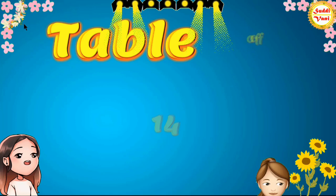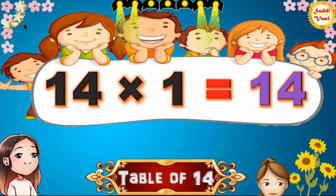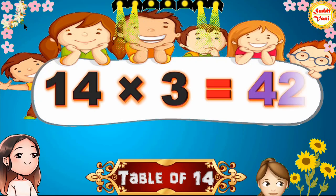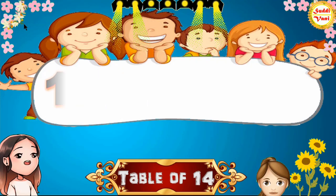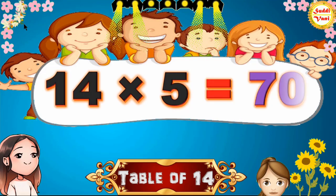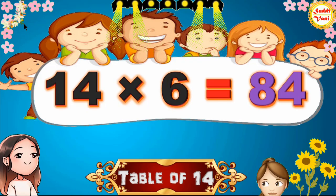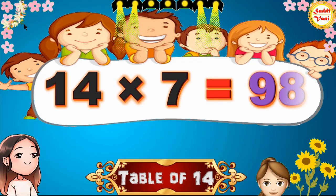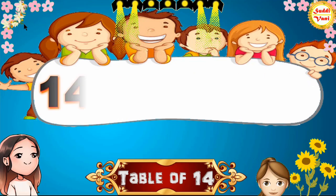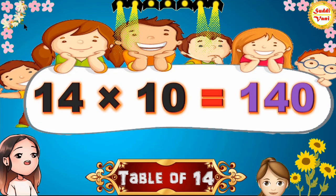Hello children, we will learn table of 14. 14×1=14, 14×2=28, 14×3=42, 14×4=56, 14×5=70, 14×6=84, 14×7=98, 14×8=112, 14×9=126, 14×10=140.